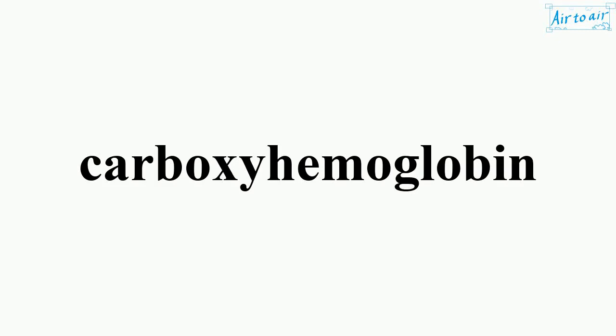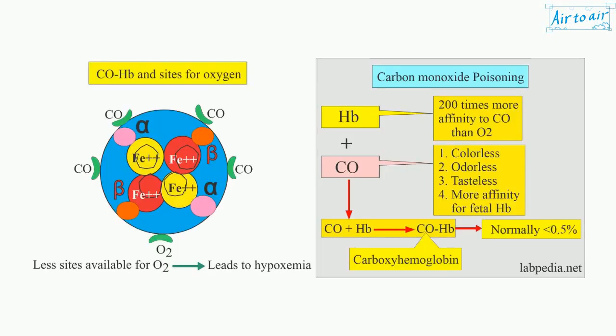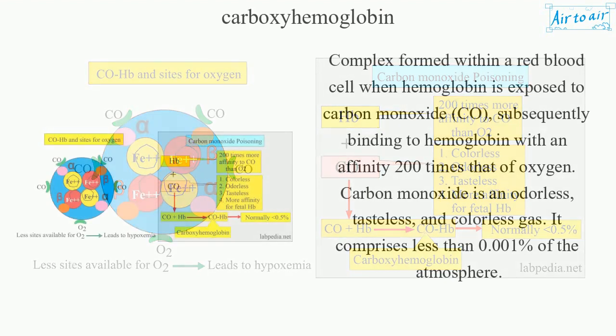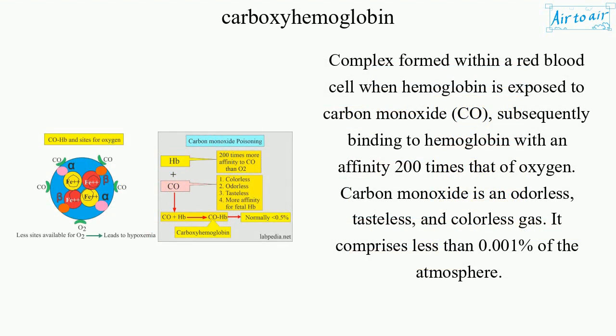Carboxyhemoglobin is a complex formed within a red blood cell when hemoglobin is exposed to carbon monoxide, CO, subsequently binding to hemoglobin with an affinity 200 times that of oxygen.